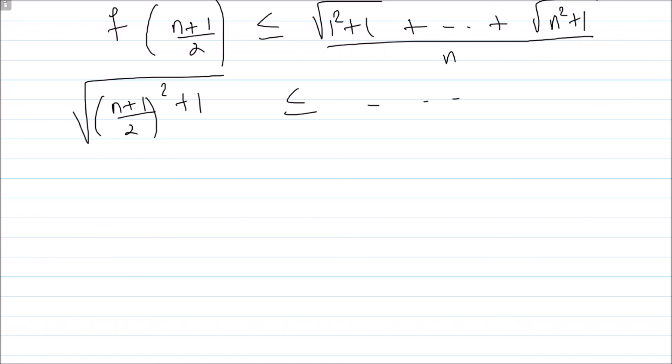So I have f of (n plus 1) by 2 less than or equal to root of 1 squared plus 1 plus root of n squared plus 1, whole divided by n. This is root of ((n plus 1)/2)² plus 1, which simplifies to (n² plus 2n plus 1 plus 4) divided by 2.